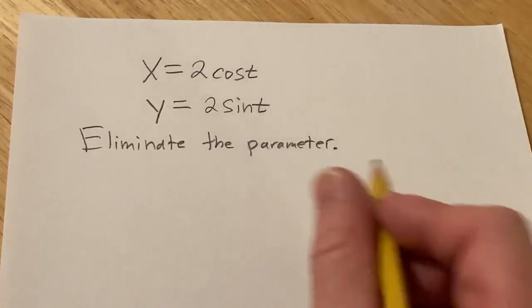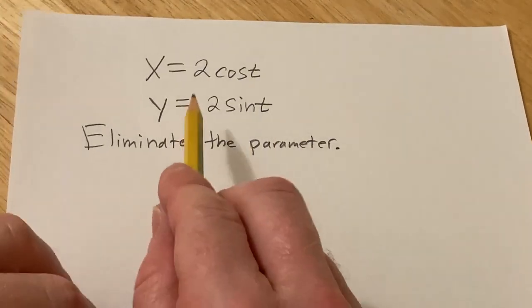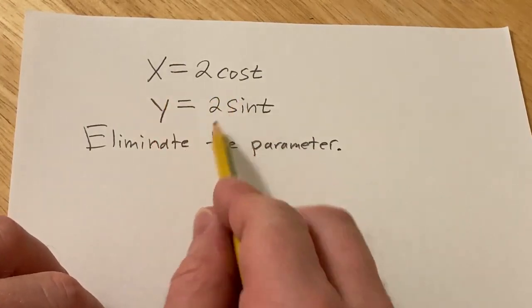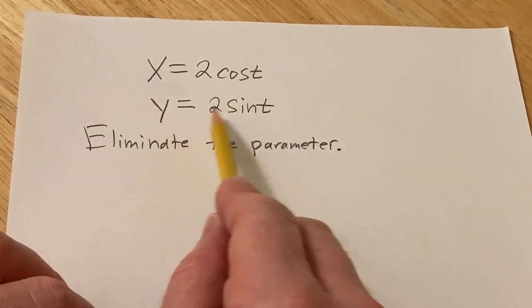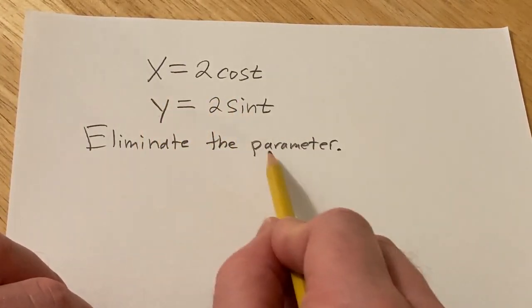Hi, in this video we're going to do this problem. So here we have two equations x equals 2 cosine t and y equals 2 sine t and the question is to eliminate the parameter.